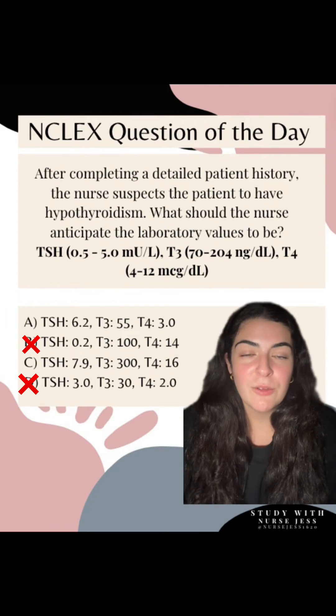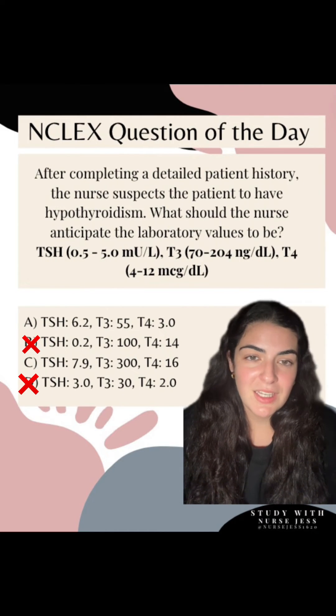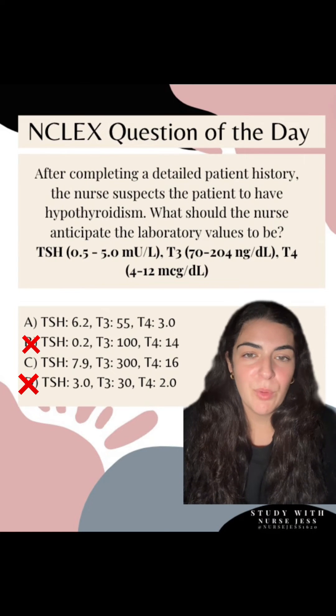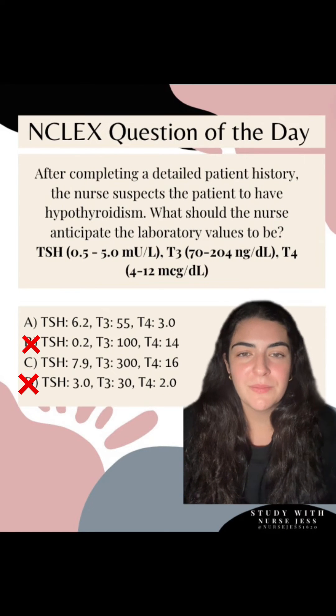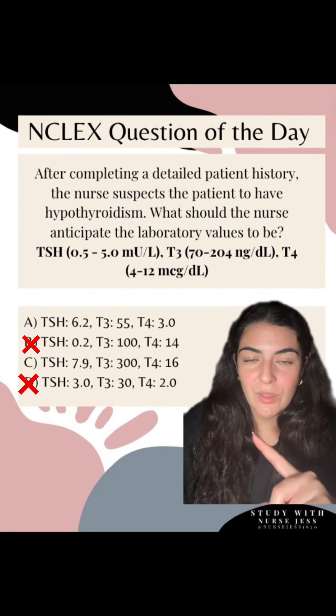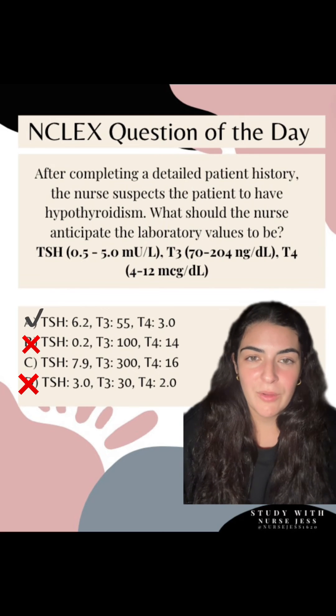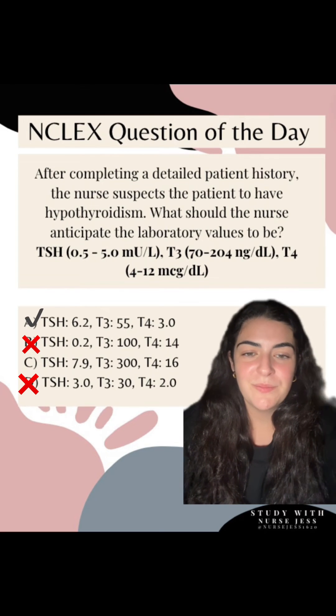Now T3 and T4 are going to be opposite of TSH, so they're going to be low in hypothyroidism. And if you look at option A, that is our correct answer.